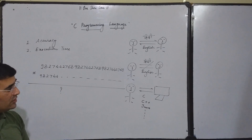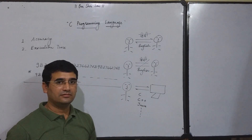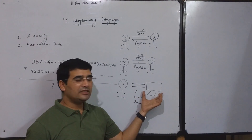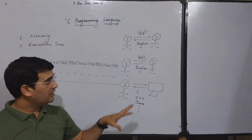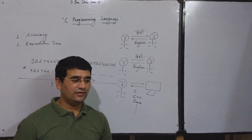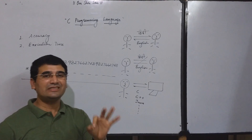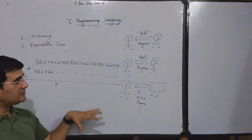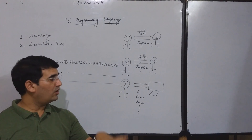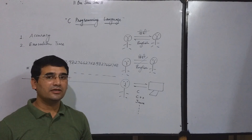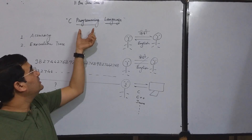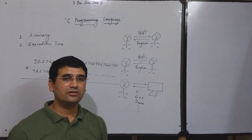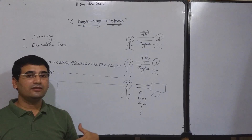Now, how does this computer perform calculations? The computer is a machine designed by human beings. To perform calculations, we must teach that machine how to perform arithmetic. There must be some way to teach the computer how to perform calculations. That process is basically programming. Programming is the mechanism through which we can teach machines or computers to perform whatever task we want.